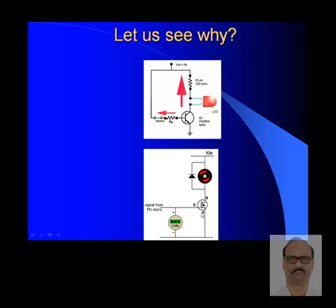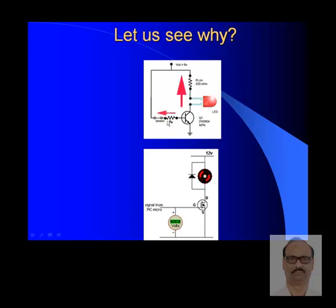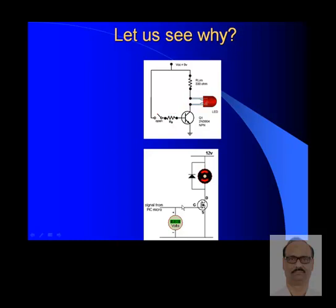This is a transistor versus a MOSFET. The indication shows the flow of electrons — electrons flow in the opposite direction to conventional current, so don't get confused. The current actually flows in the conventional direction, the LED glows accordingly, and the motor operates when voltage is applied. This is how it works comparing transistor versus MOSFET.